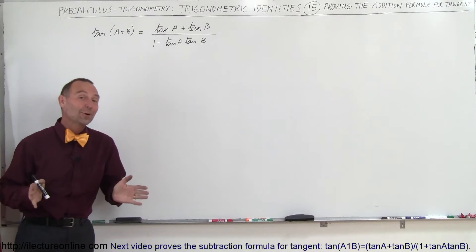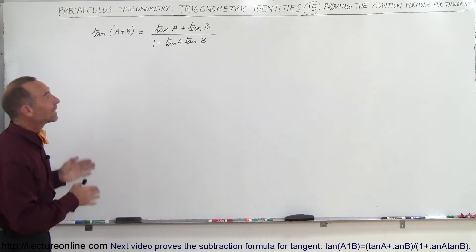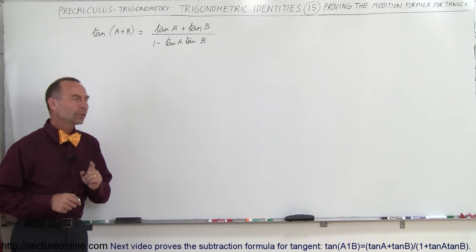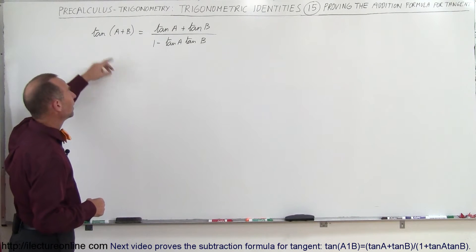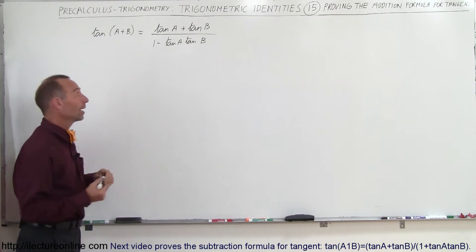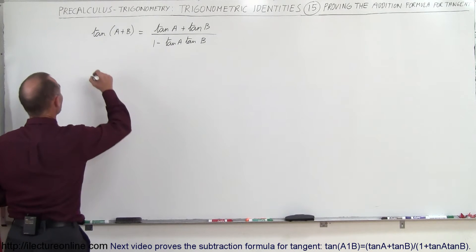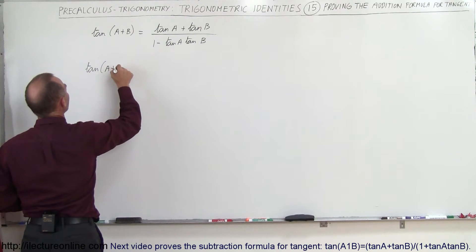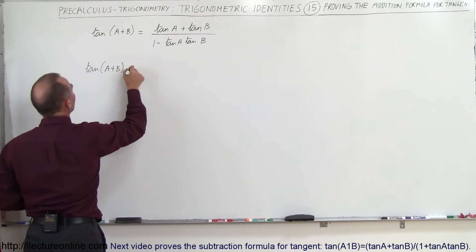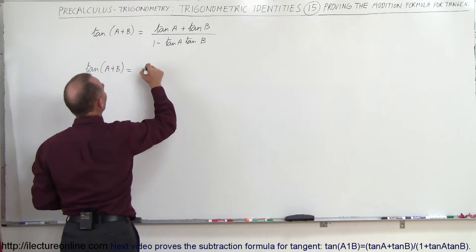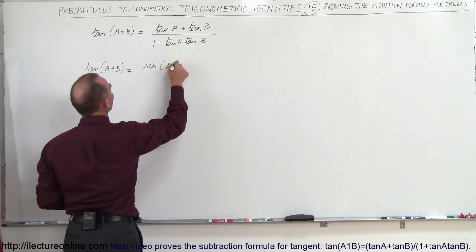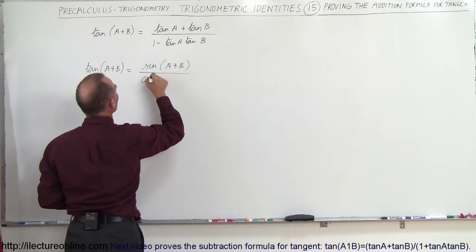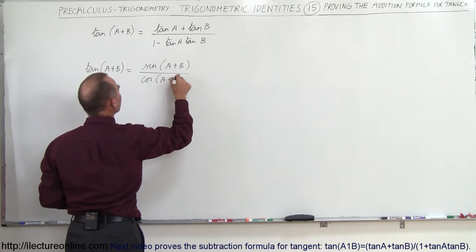Welcome to Electronline. Now we're going to prove the addition formula for the tangent. What we're going to do is take the tangent and convert it to sine over cosine. So we're going to write this as follows: the tangent of A plus B is equal to the sine of A plus B divided by the cosine of A plus B.